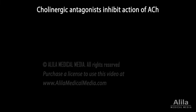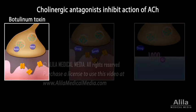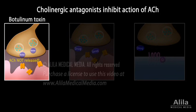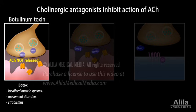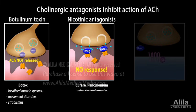Cholinergic antagonists inhibit acetylcholine action by several mechanisms. Botulinum toxin, or Botox, is a bacterial toxin that blocks acetylcholine release by inhibiting exocytosis. Botox is used to treat localized muscle spasms, movement disorders, and strabismus, and is given by direct injection into the affected muscle. Nicotinic antagonists compete with acetylcholine for binding to the nicotinic receptor and are most commonly used to relax skeletal muscles during surgery.